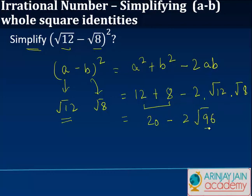Now we can write 96 as 16 times 6, and √96 can be written as √16 times √6.